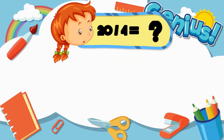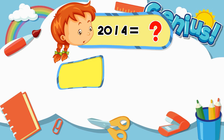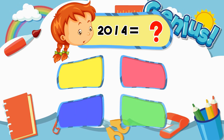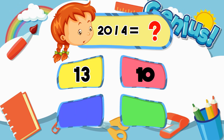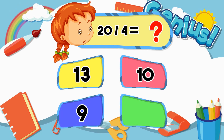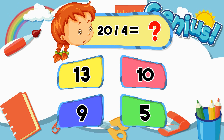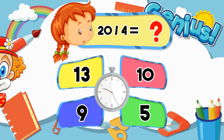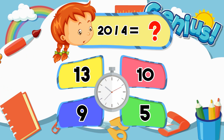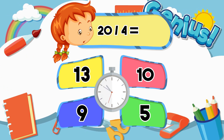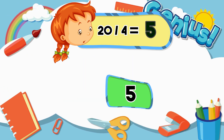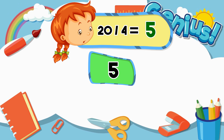What is 20 divided by 4? Options: 13, 10, 9, 5. Answer: 5.